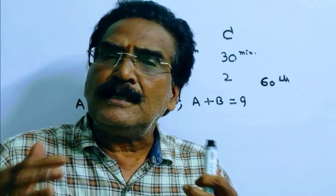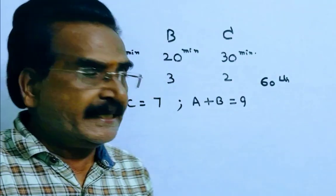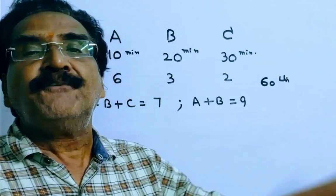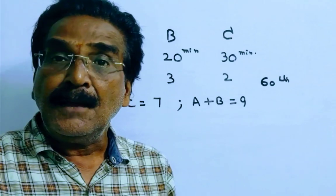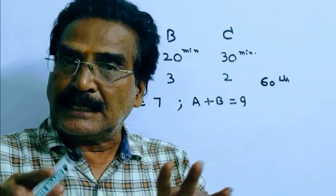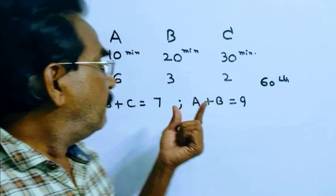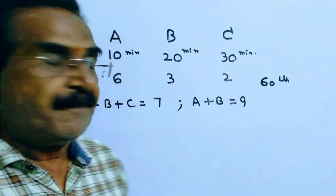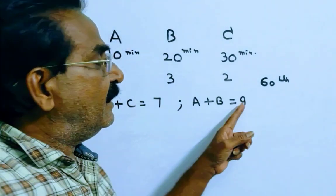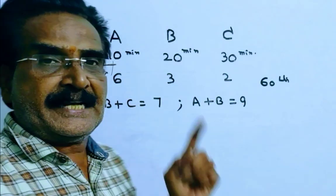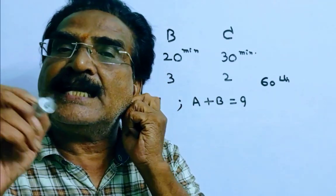Friends, in the beginning all the 3 pipes are opened. And 2 minutes before the tank is filled, pipe C is closed. That means in the last 2 minutes, pipe A and B worked. A and B can fill 9 liters, 6 plus 3, A and B can fill 9 liters per minute.